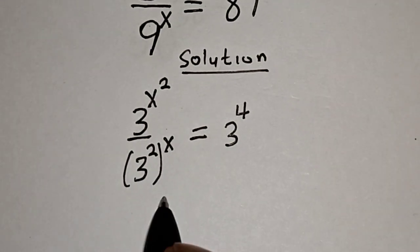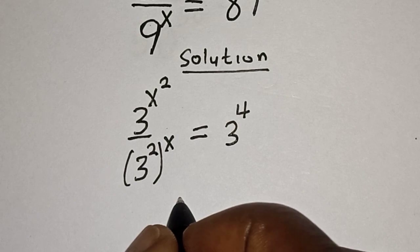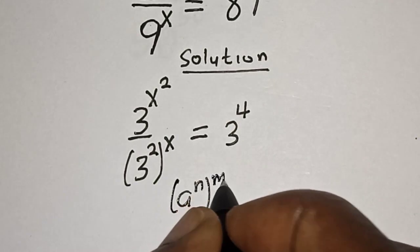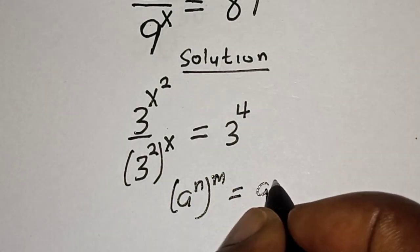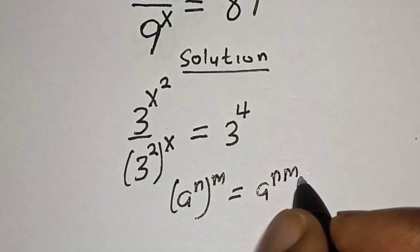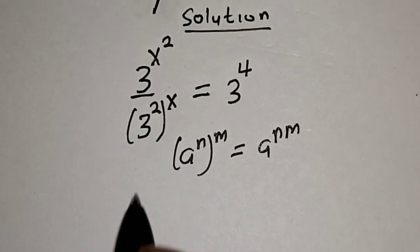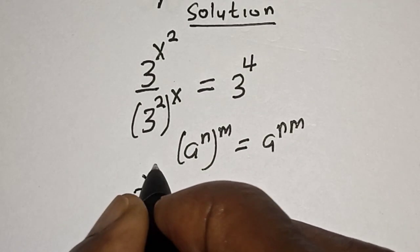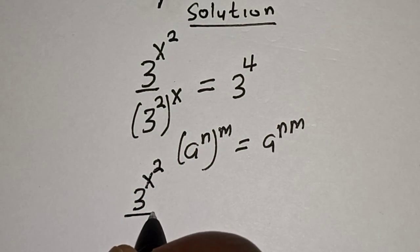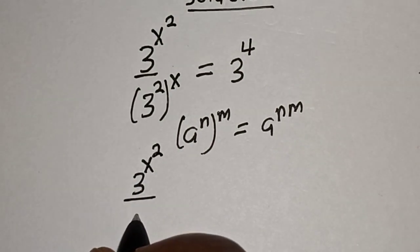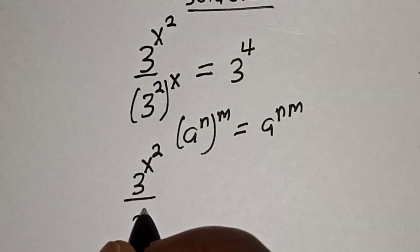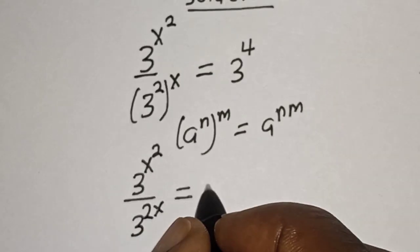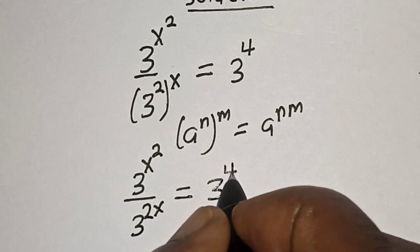Remember this exponential rule: a raised to power n, raised to power m, is equal to a raised to power nm. So this becomes 3 raised to power x squared, divided by 3 raised to power 2x, is equal to 3 raised to power 4.